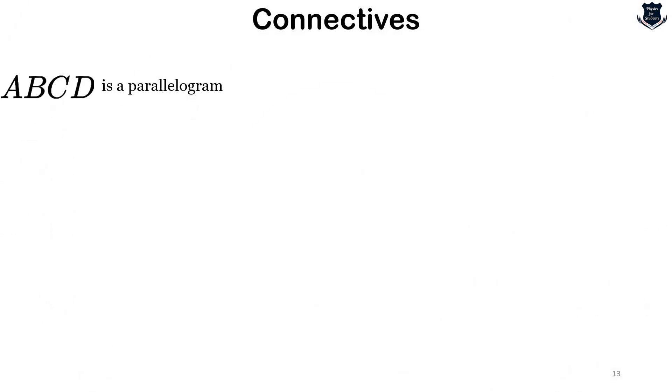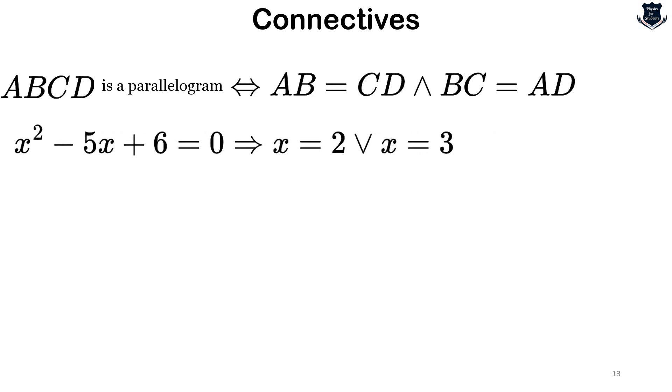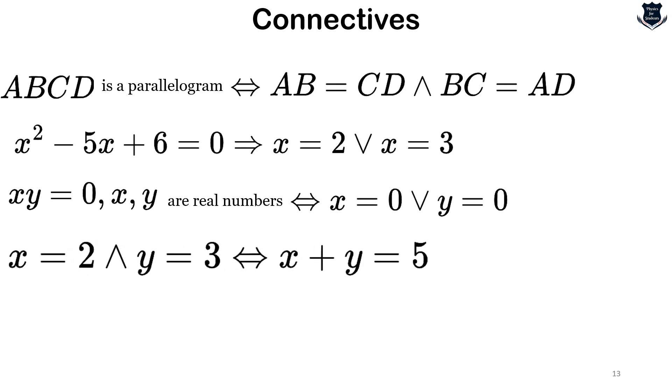For example, ABCD is a parallelogram if and only if AB = CD and BC = AD. x² - 5x + 6 = 0 implies x = 2 or x = 3. If xy = 0 and x and y are real numbers, then x = 0 or y = 0. If x = 2 and y = 3, then x + y = 5.